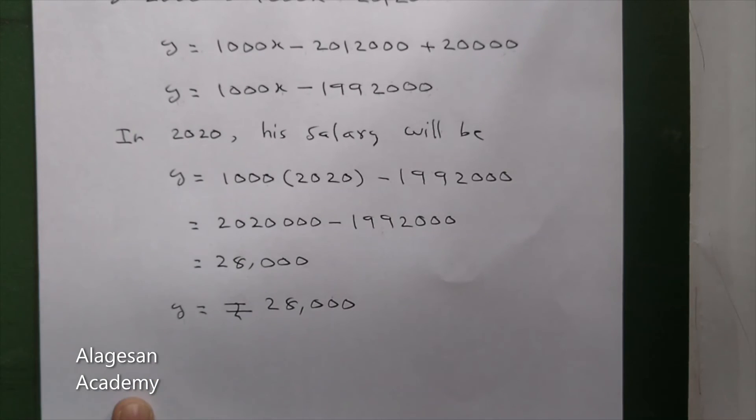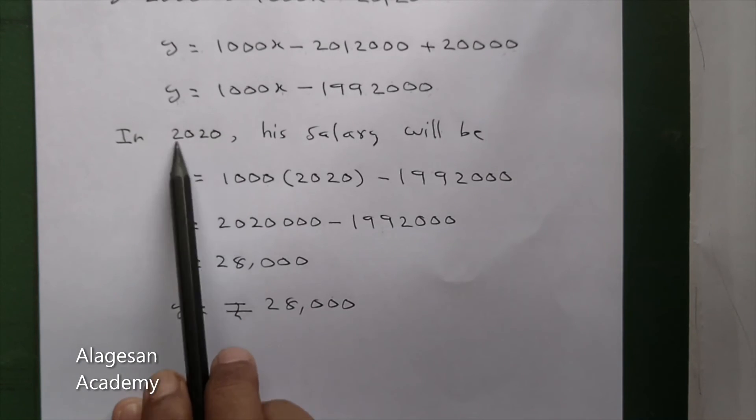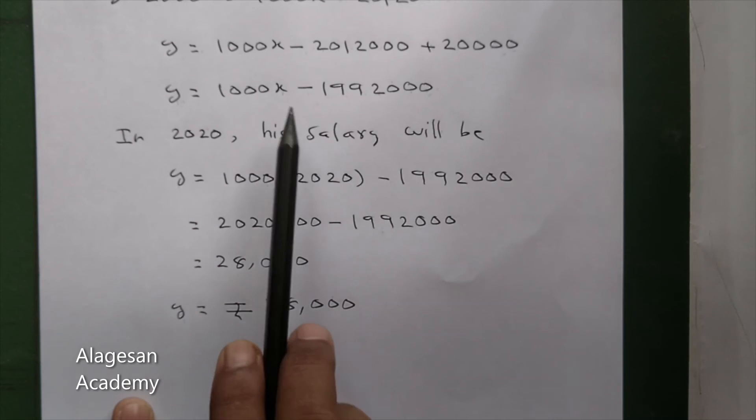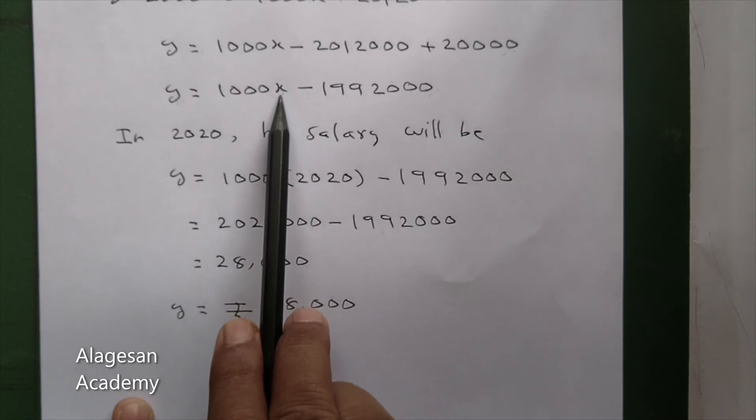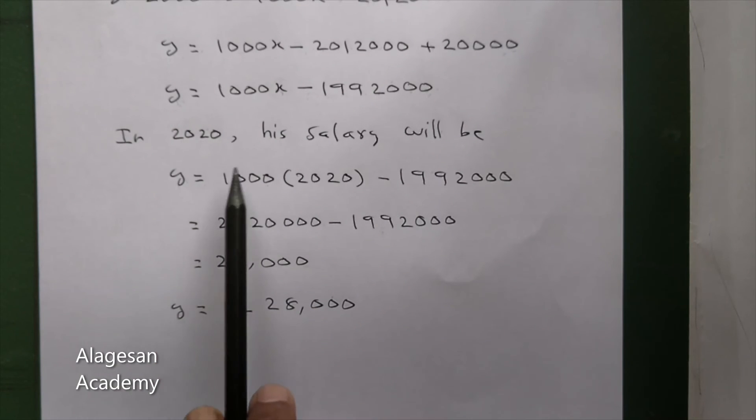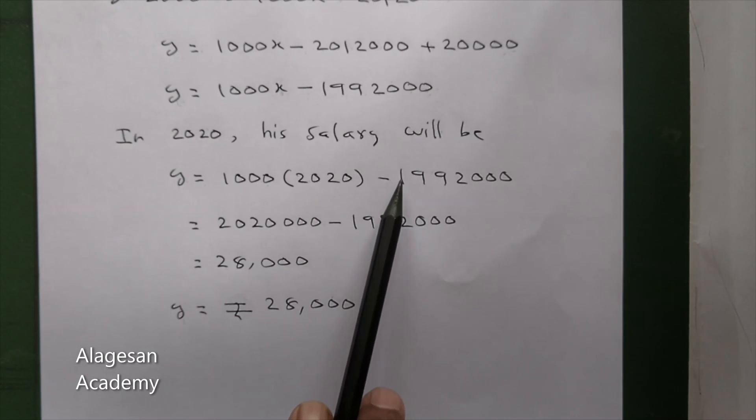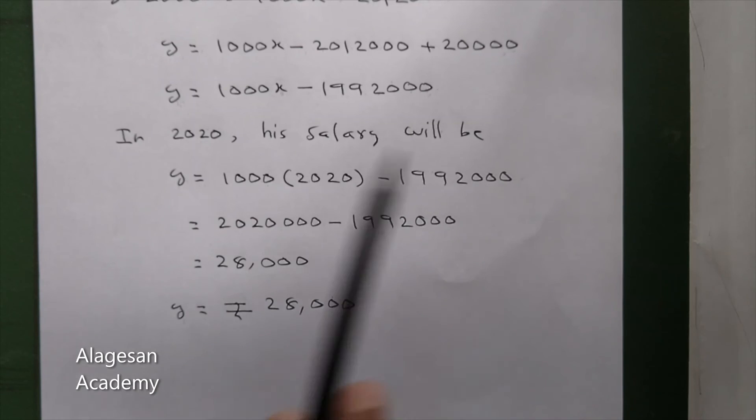Second question is, in 2020, what is his salary? 2020 is the year. In the equation, x is the year, 2020. We have to find y. So y is equal to 1000 into x, x is 2020, minus 1,992,000.